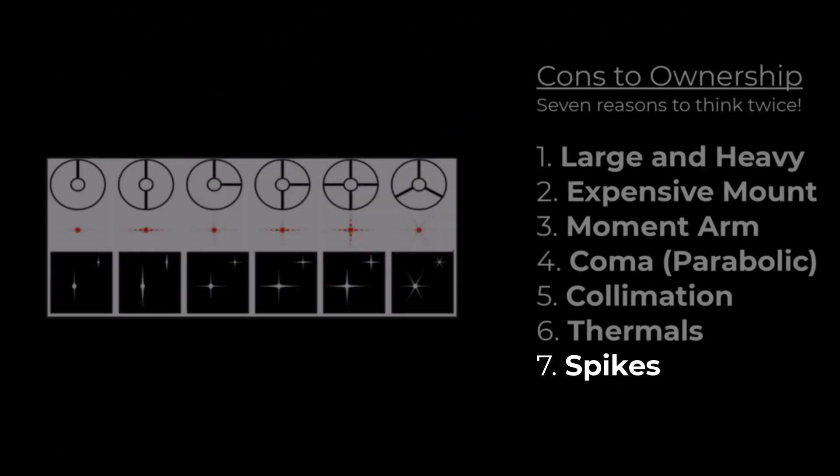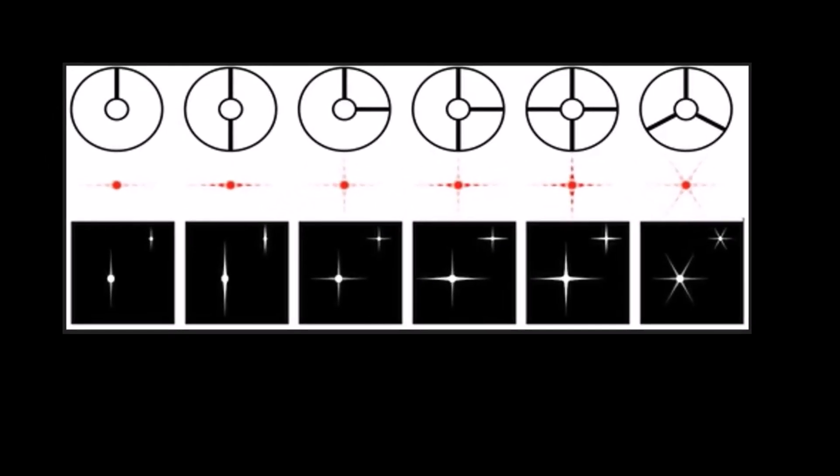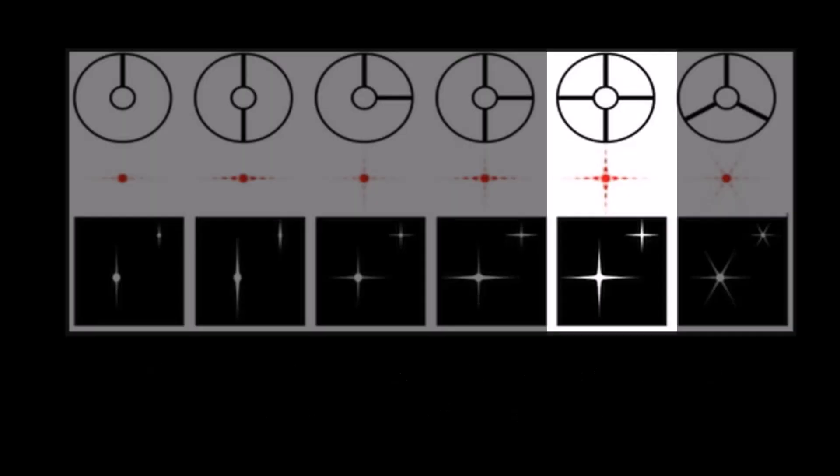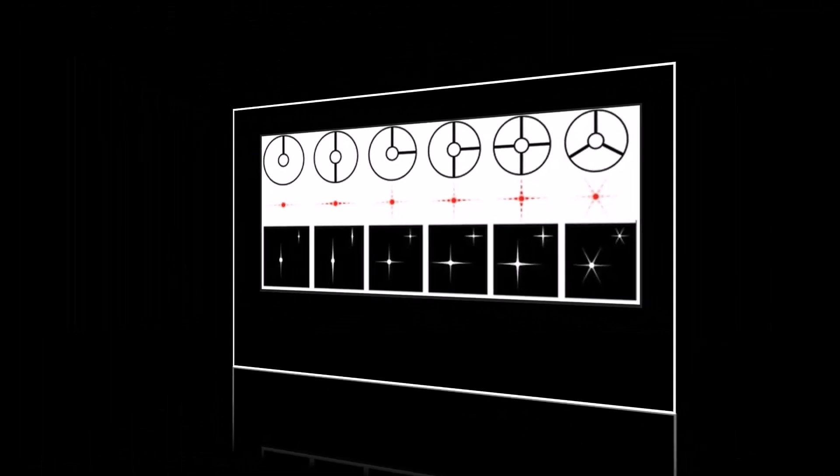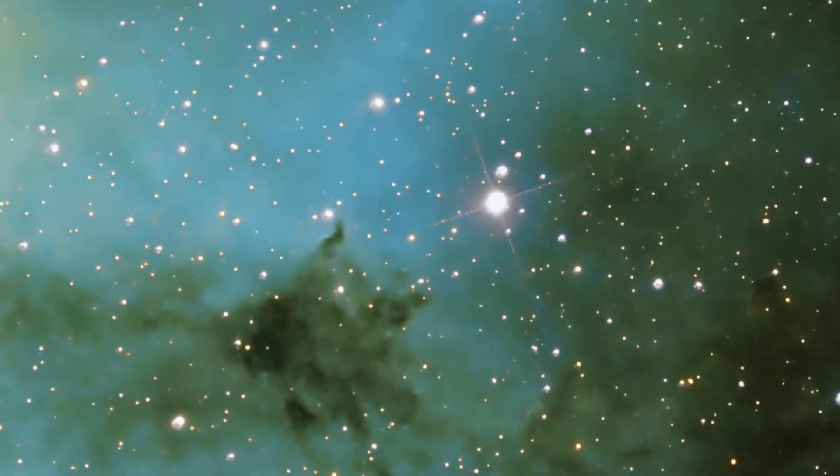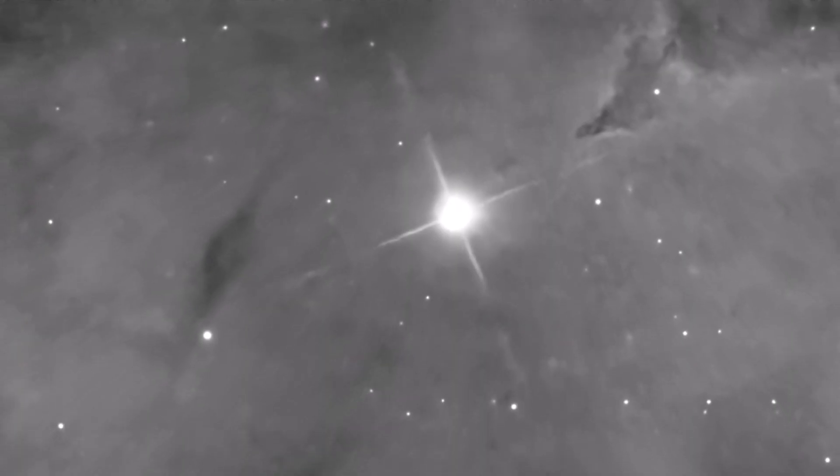So the last con that I would say is an optional con, which is diffraction spikes that are caused by that secondary mirror spider assembly. A lot of people dislike these diffraction spikes. I happen to love them. And they happen on the brightest stars in your image, typically. Not all of them, but all the bright ones. You'll certainly see them. And for some, they don't want this. For me, I love them. So this is for you to decide. But either way, that is a good transition into some of the pros for a 12-inch Newtonian.